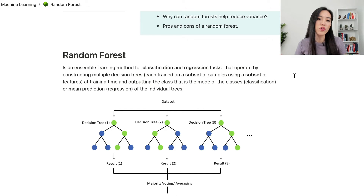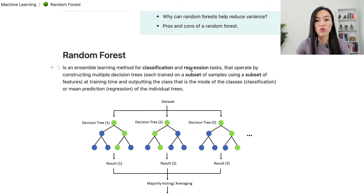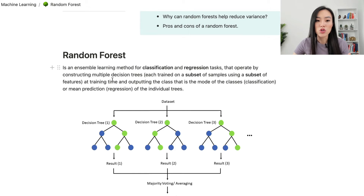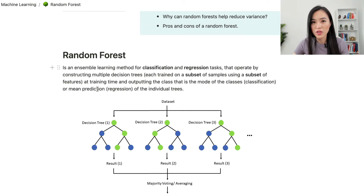A random forest is an ensemble learning method for both classification and regression tasks. It operates by constructing multiple decision trees, where each tree is trained on a subset of samples using a subset of features. Once it constructs multiple decision trees at training time, it outputs the class that is the mode of the classes for classification tasks, or the mean prediction for regression tasks of the individual trees.